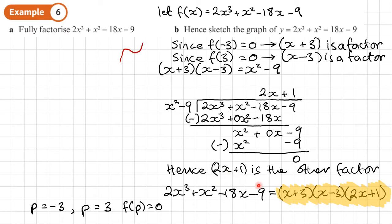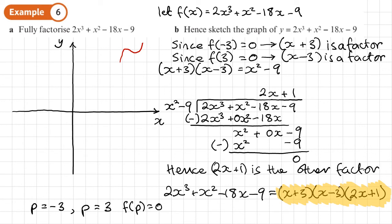Once we've got the factors, we work out the shape: it's a cubic with a positive x cubed term, so it goes up from left to right in the standard cubic shape. It crosses the x-axis at negative 3, 3, and where 2x plus 1 equals 0, which gives x equals negative one half. Since there are no squared factors, it won't bounce anywhere — it goes up through negative 3, down through negative one half, and back up through 3.